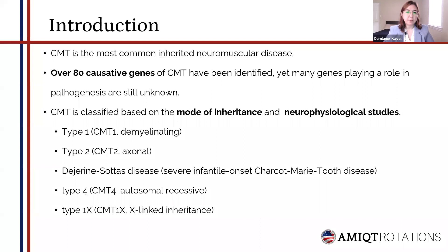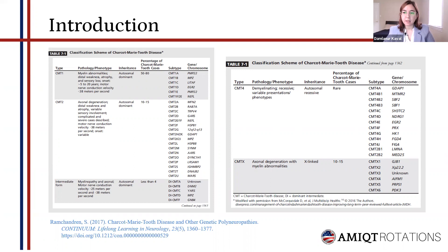Type 1 CMT, also known as the demyelinating type; type 2 axonal; the Déjerine-Sottas disease form of CMT with severe infantile onset; type 4 is autosomal recessive CMT; and X-linked inheritance CMT1X. This is a very broad categorization — there are many subtypes of CMT and many genes playing a role in the pathogenesis. Generally, phenotype is similar, but there are distinct features within these subtypes.